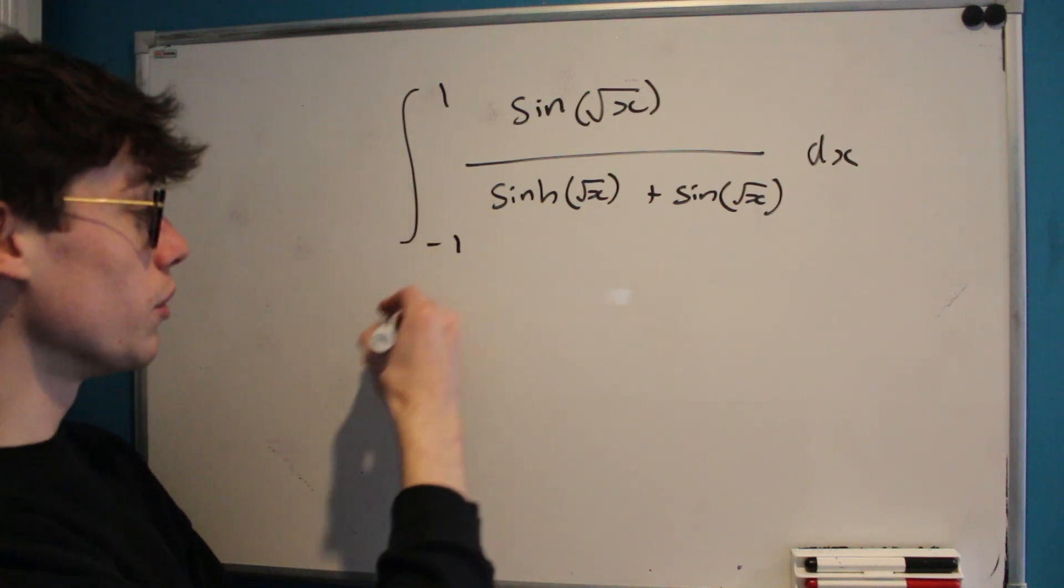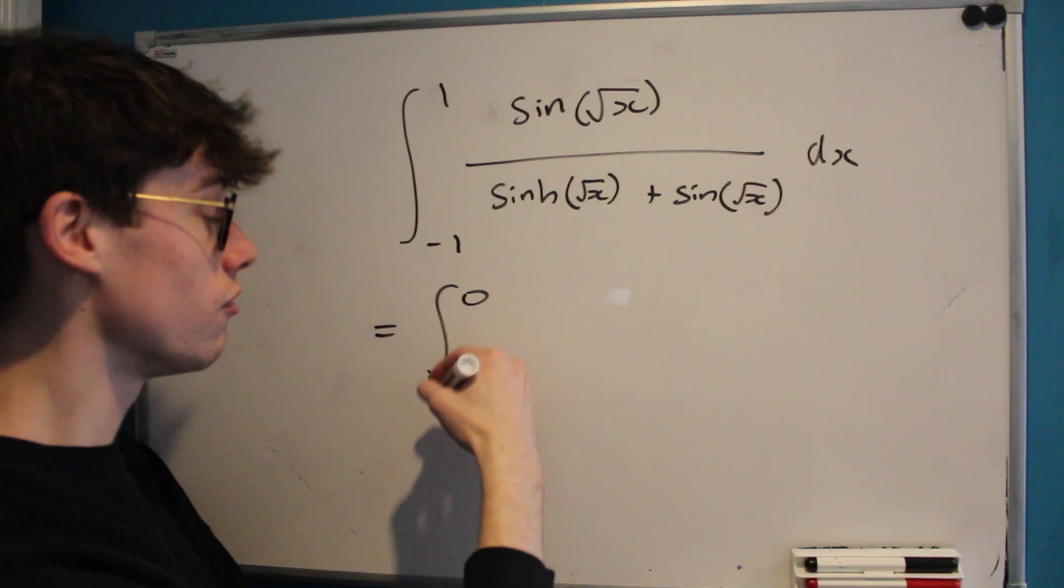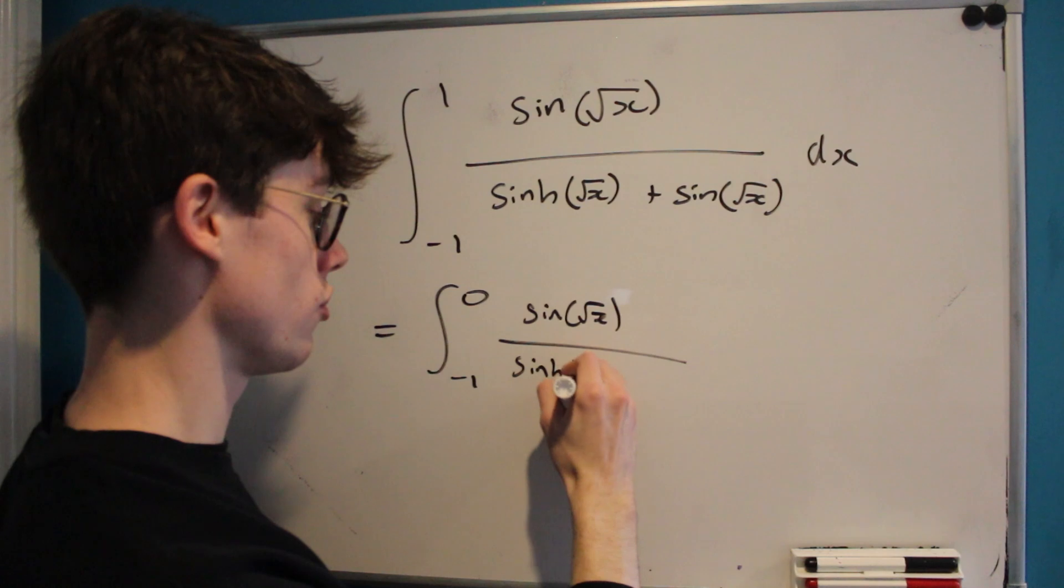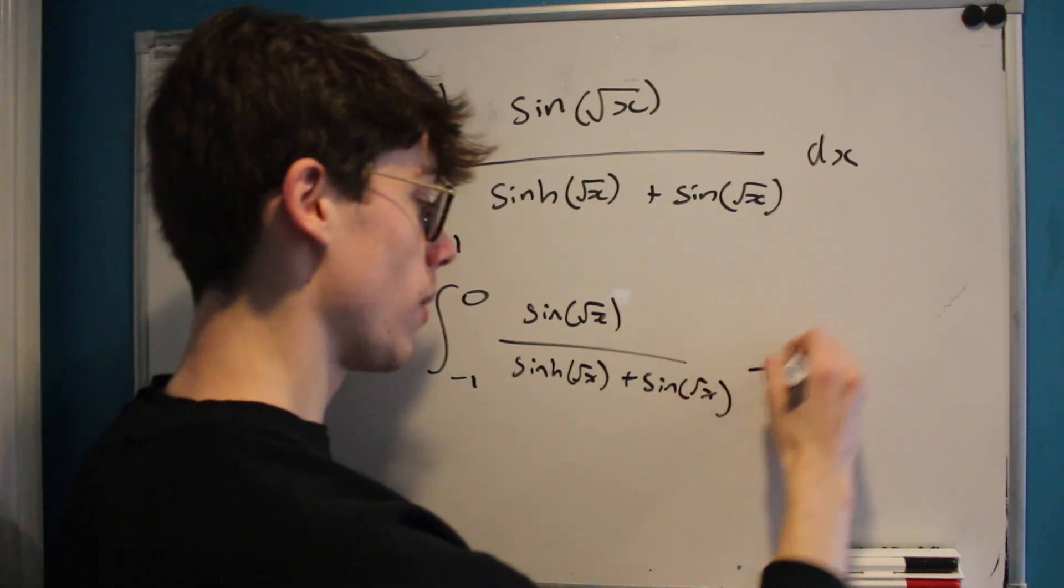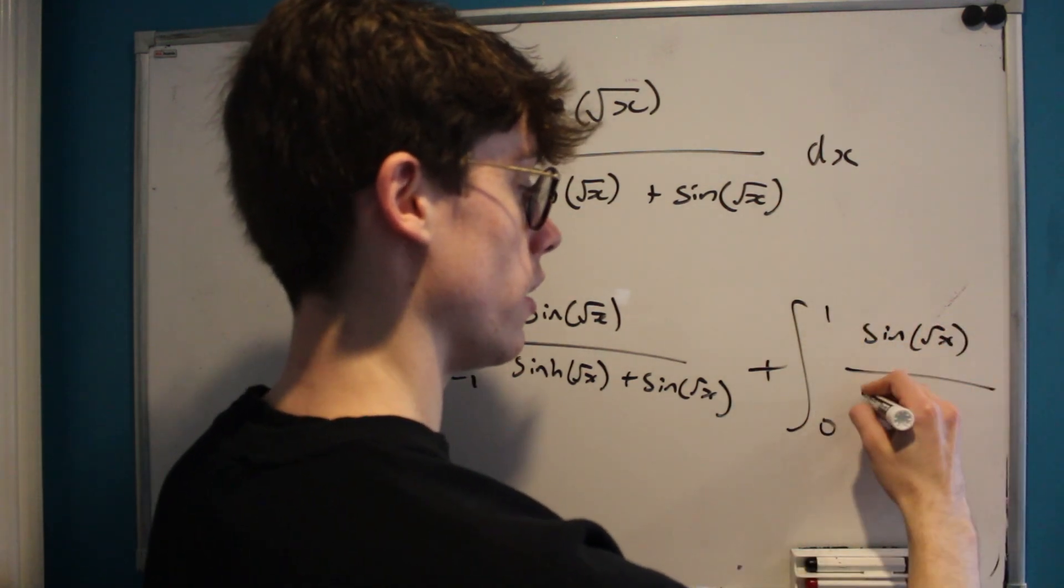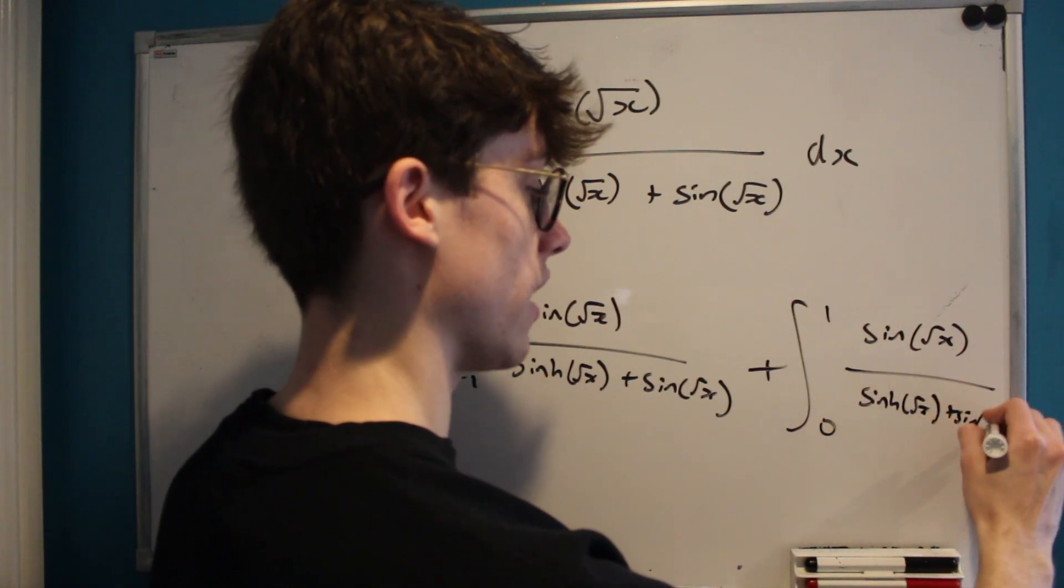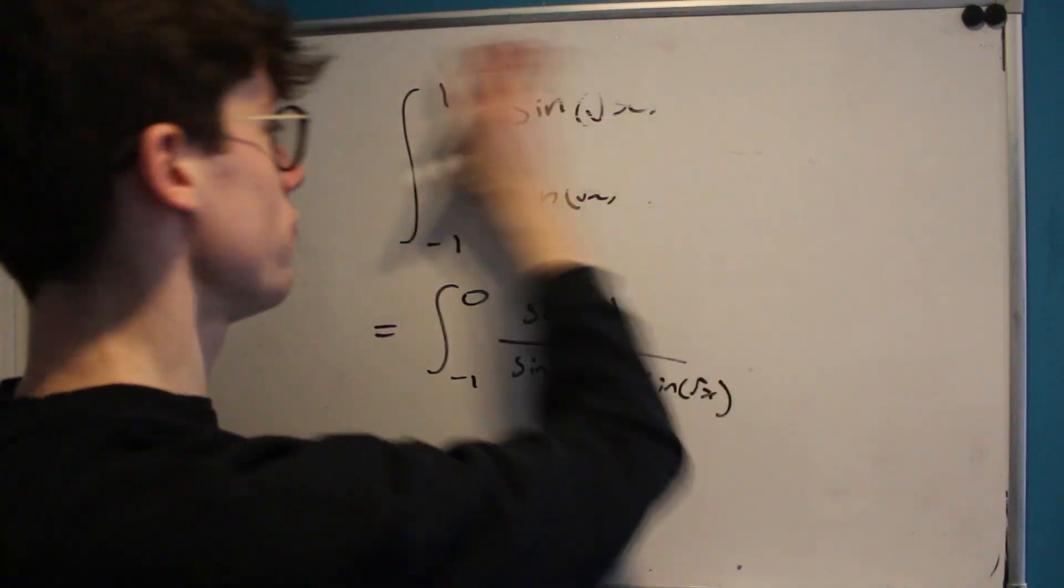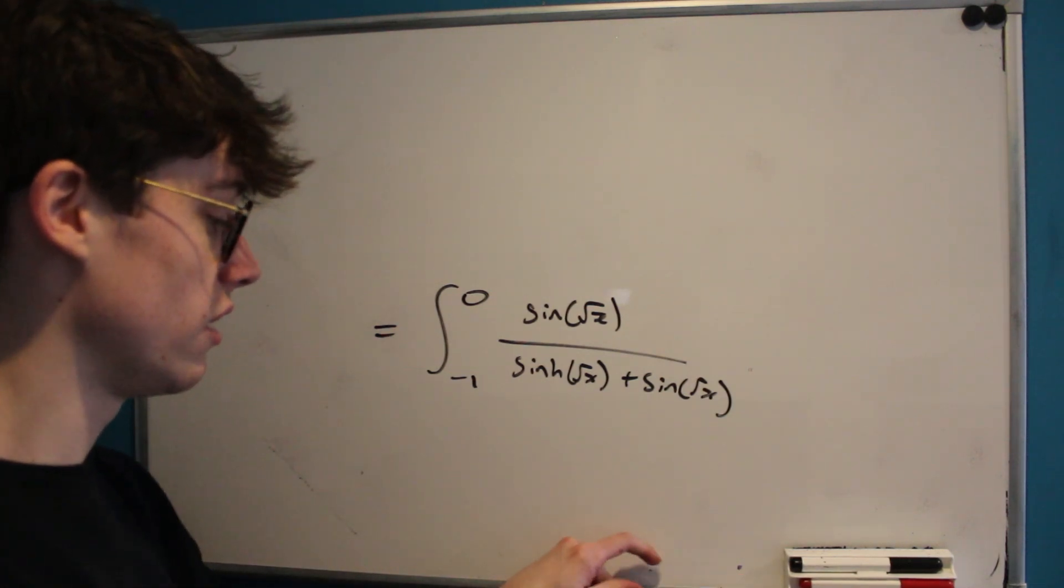So we want to split this up into the integral from negative 1 to 0 of sine root x over sinh root x plus sine root x, plus the integral from 0 to 1 of sine root x over sinh root x plus sine root x. And this part we're going to ignore for now because the thing that's really interesting is this part over here, the integral from negative 1 to 0.